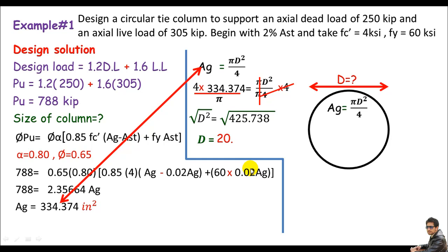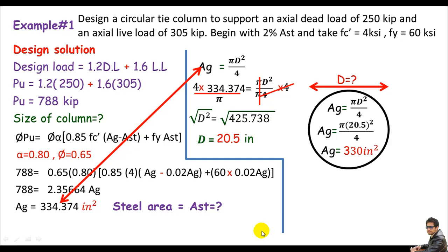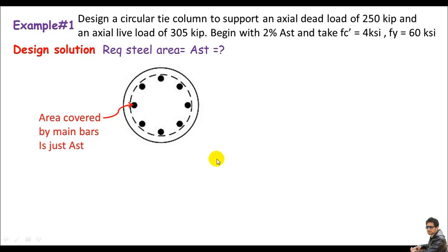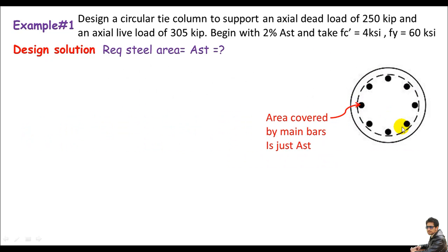I'll round that up to d = 24.5 inches. My next step is to calculate the gross cross-section area using this rounded diameter: Ag = π·(24.5)²/4 = 330 square inches. The third step is the steel area Ast — the required area covered by the main longitudinal bars. Looking at the section, those 8 dots represent the main bars, and the area they cover is called Ast.